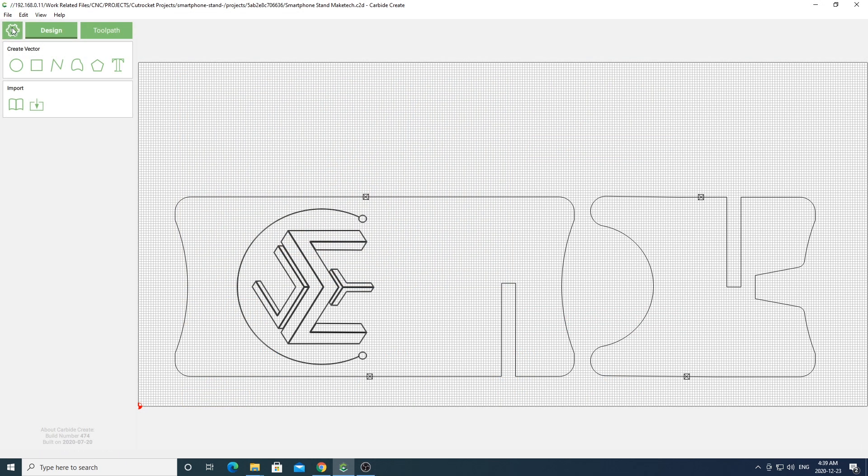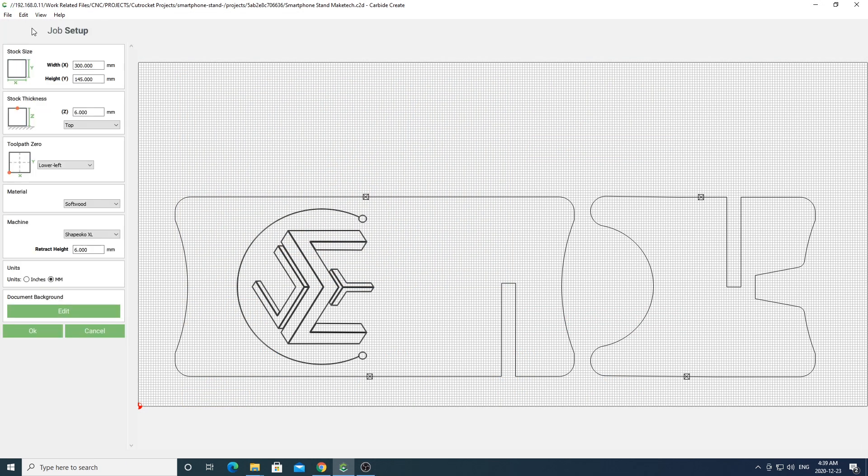Once you open up your project in carbide create you'll get something that looks like this. Go ahead and open the settings area and change the settings to whatever material you'll be using. I've set mine up for a six millimeter or quarter inch plywood.